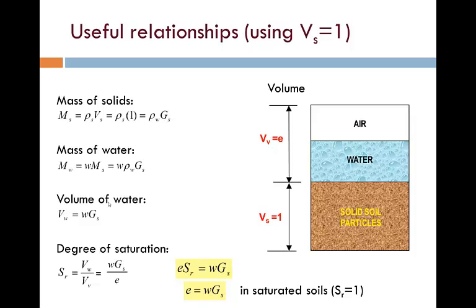The volume of voids VV then equals the void ratio E. The mass of solids can be written in the simpler format rho W GS because VS is 1. The mass of water is therefore W times rho W GS. And the volume of water is its mass over its density, which gives W times GS. Finally, the degree of saturation SR is equal to VW over VV, which works out to be W GS over E.